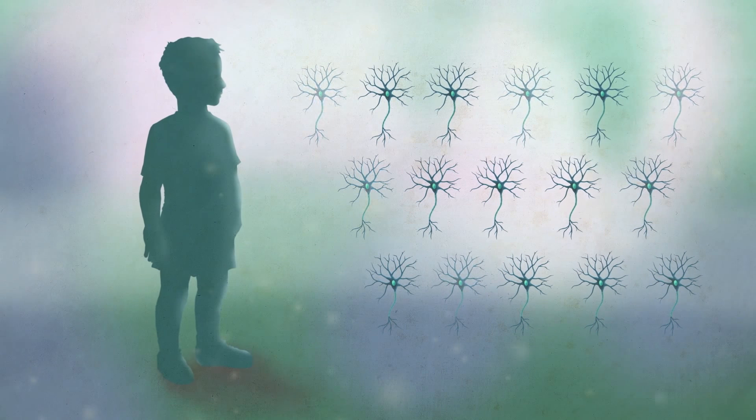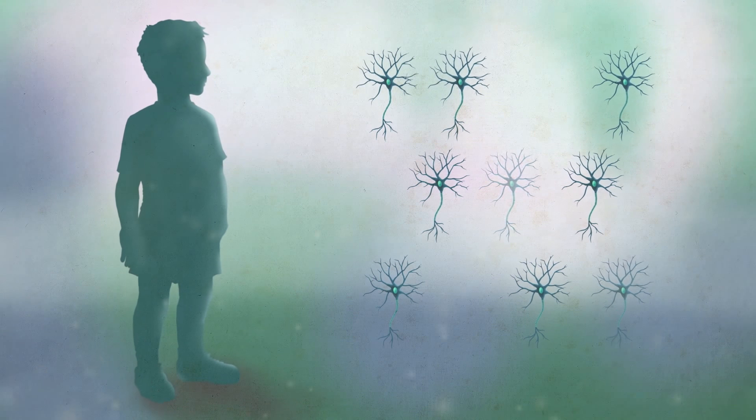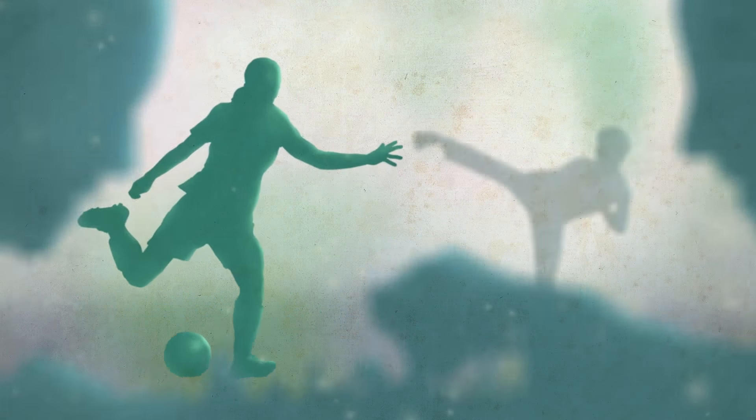Early in life, the brain eliminates those extra cells to keep only those connections you need. Later on, unused neurons can wither away. Physical and mental exercise preserves them, keeping your brain healthy.